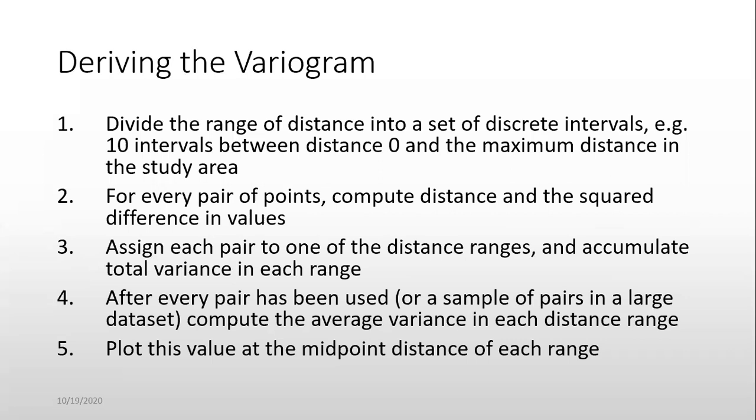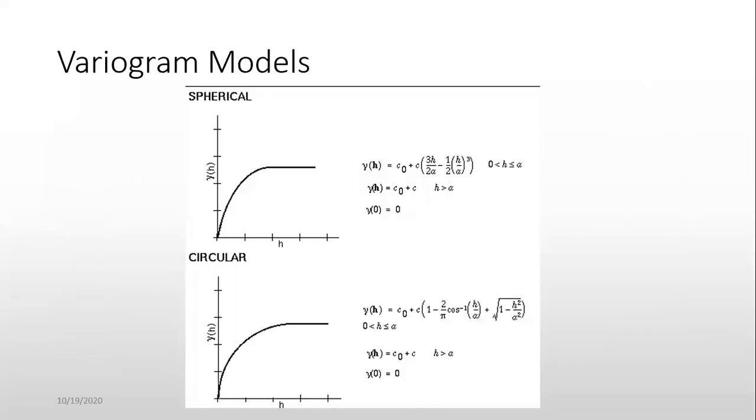Compute the average variance in each distance range. Plot these values at the midpoint distance of each range. It's all done by the machines. These are the statistical formulas applying for finding this kriging or variogram.